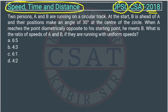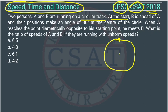Two persons A and B are running on a circular track. There is a circular track, and A and B are running. At the start, B is ahead of A. Suppose A is standing here, B is ahead of A. Suppose this is B, and their positions make an angle of 30 degrees at the center of the circle.